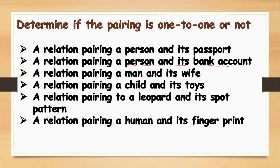A relation pairing a man and his wife. In a country where monogamy is practiced, like here in the Philippines, a man can only marry one woman. For Muslims, they can marry many, but based on Christian practice — as most of us are Christians here in our school — a man can only have one wife. And that is considered a one-to-one function.